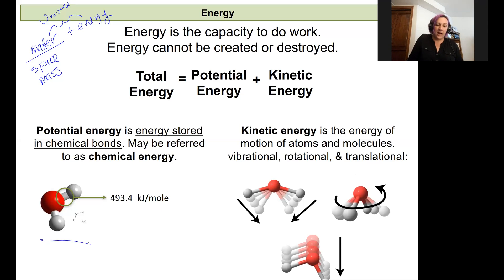Our example here, we have water, which each bond between an oxygen and a hydrogen represents about 493.4 kilojoules for every mole of water. That's energy that we would have to put into separating those atoms. When they came together, that was energy that was released.